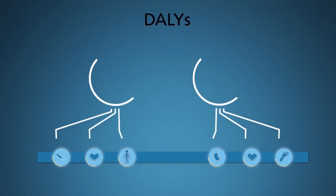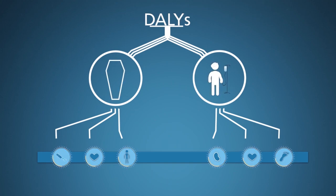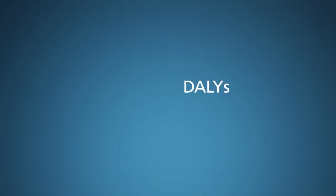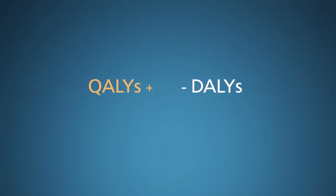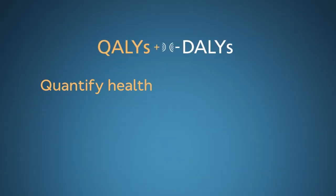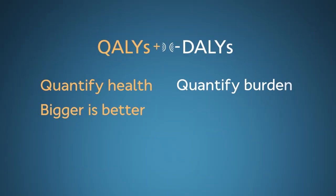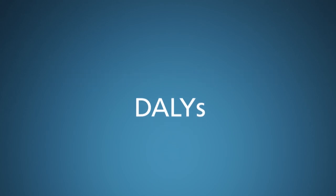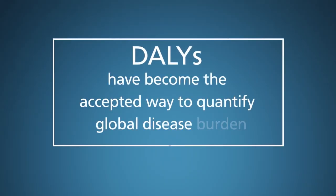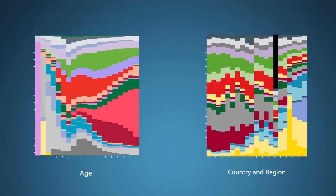DALYs were invented 30 years ago to combine separate data on disease mortality and morbidity being recorded by the World Health Organization. It complements another common metric already in use at the time, known as QALYs, or quality-adjusted life years. DALYs and QALYs both incorporate disease-related reductions in length of life and the negative effects of morbidity, but they consider the matter from opposite perspectives. QALYs quantify health, so bigger values are better, while DALYs quantify disease burden — smaller DALY values are better. Other than their opposite sign, DALYs and QALYs are almost equivalent. Since their introduction, DALYs have become the accepted way to quantify global disease burden, allowing observers to compare and evaluate disease data grouped by country and region, age and gender, and type of disease.